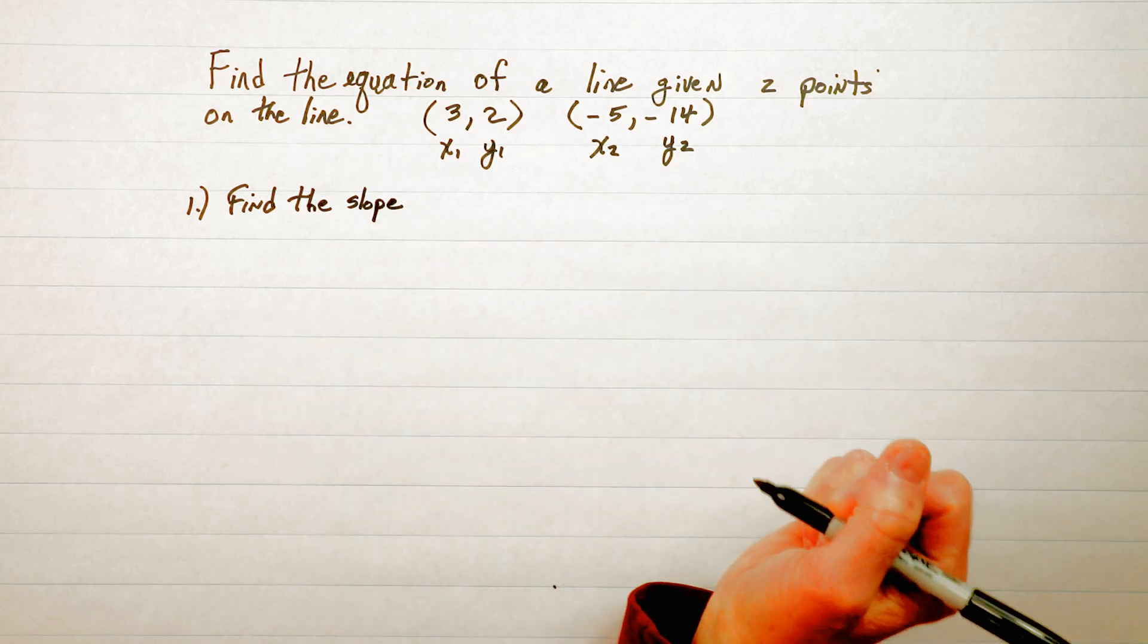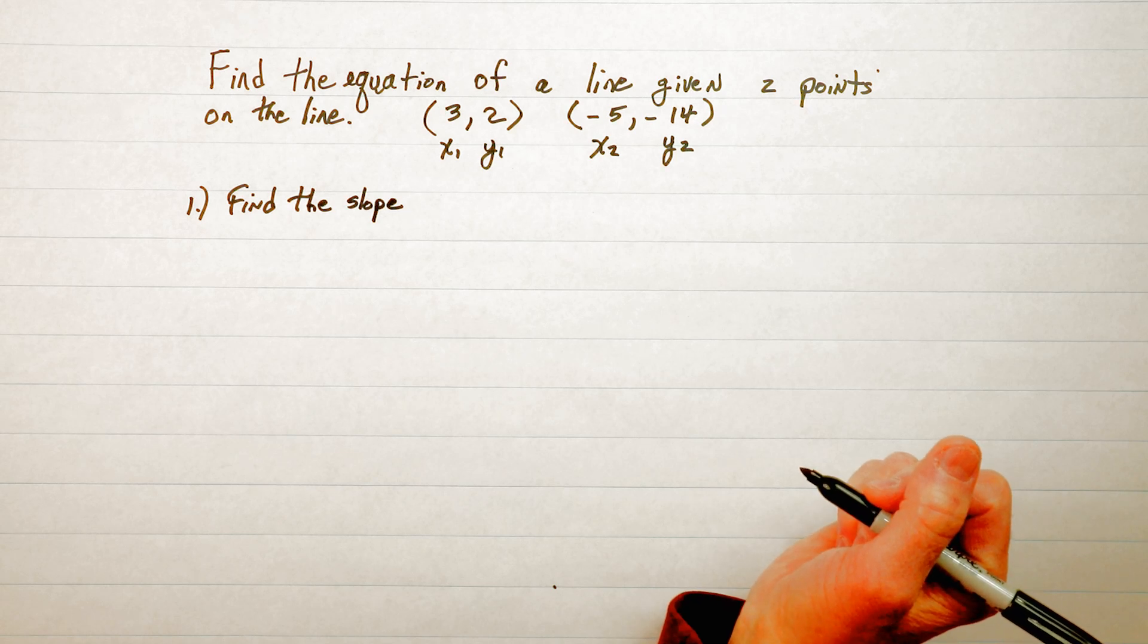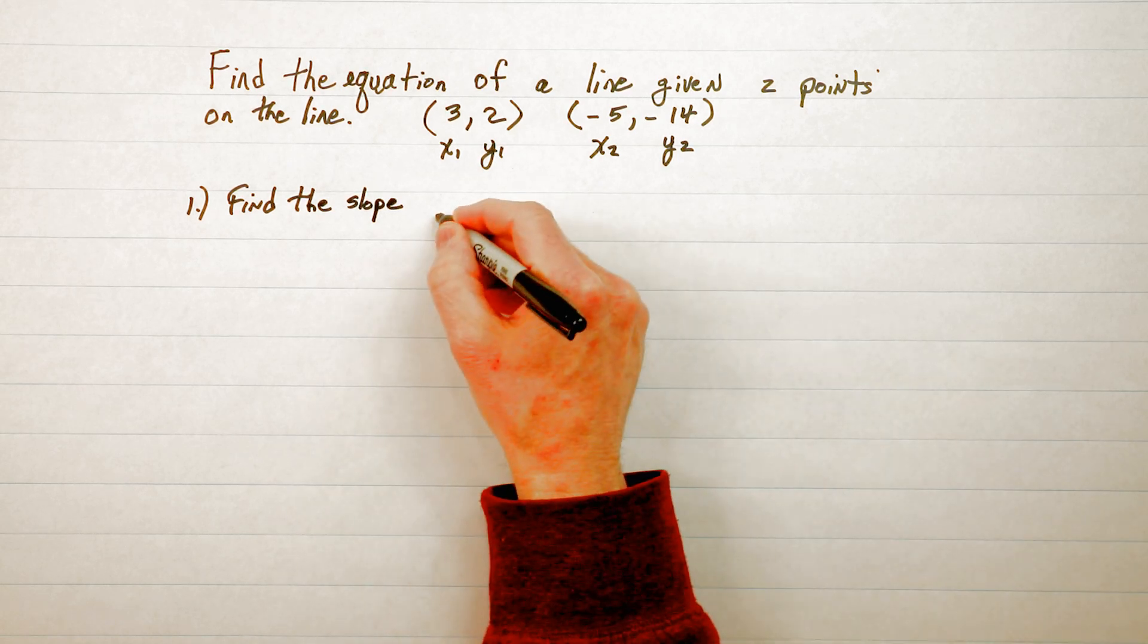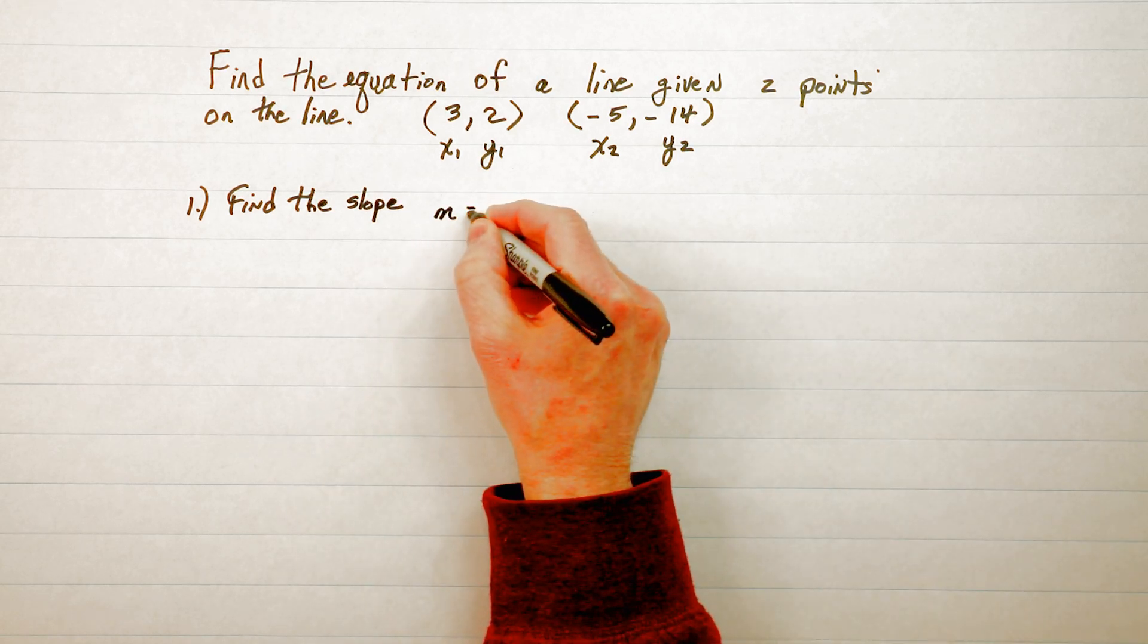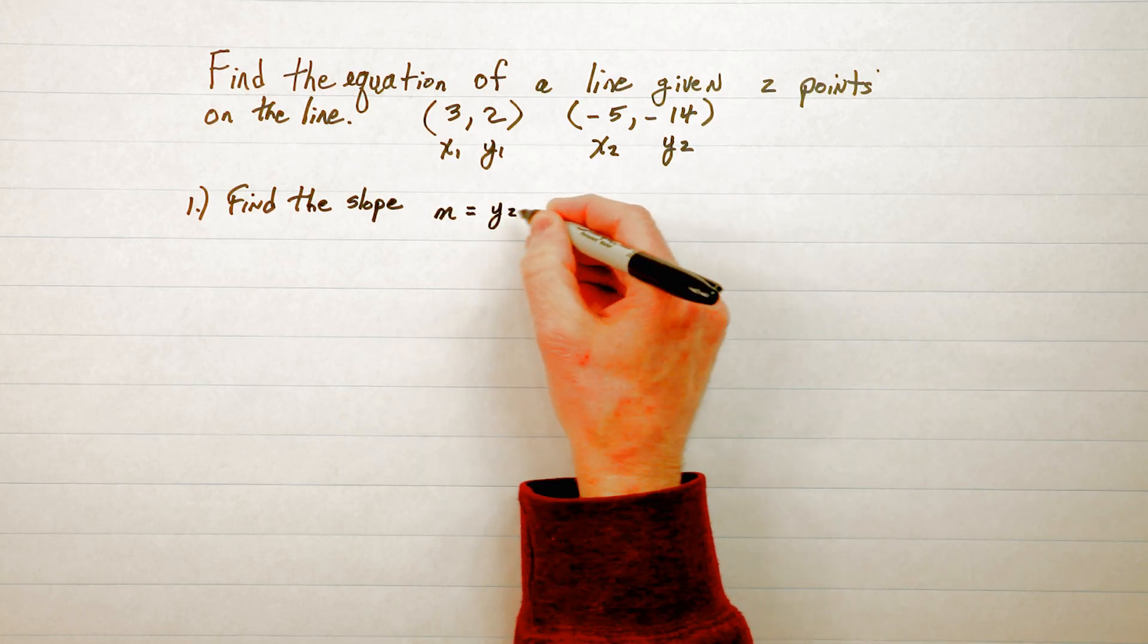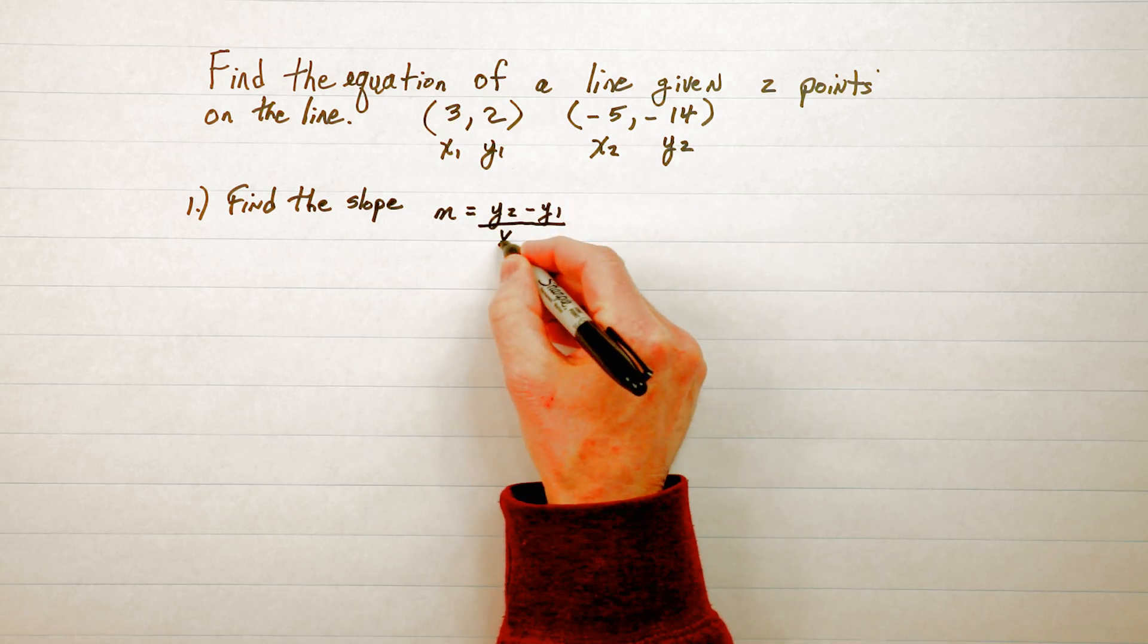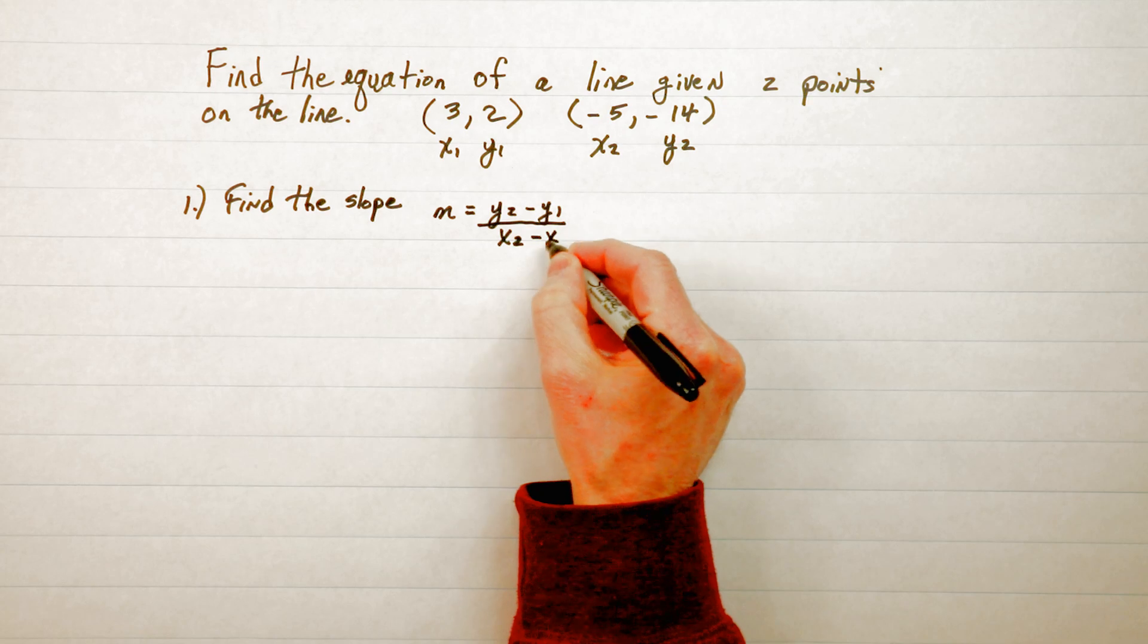Now your teacher may have said delta y over delta x and the formula that I'm going to use is delta y over delta x but it's broken down a little bit more. Y₂ take away y₁ over x₂ take away x₁.